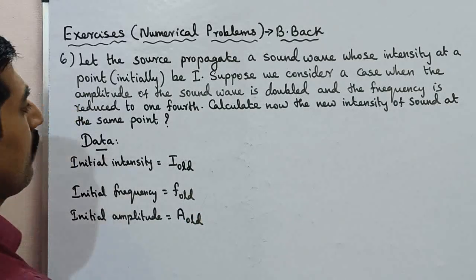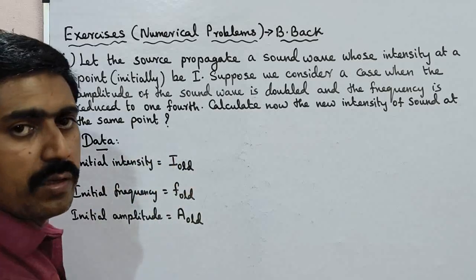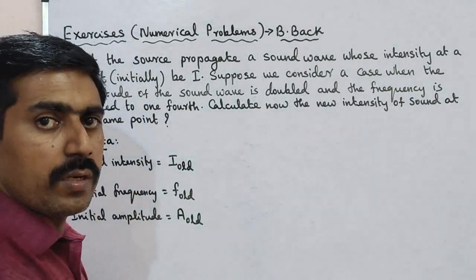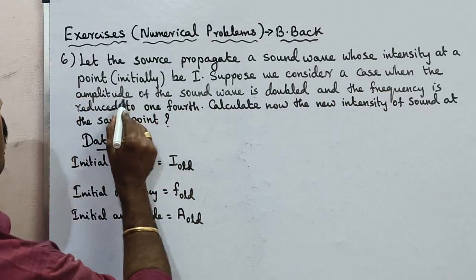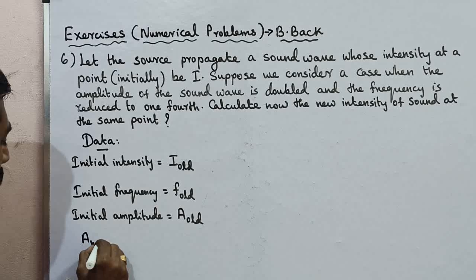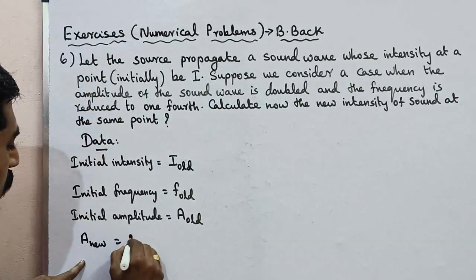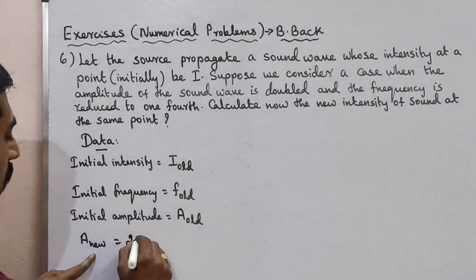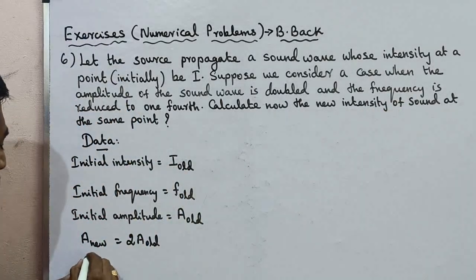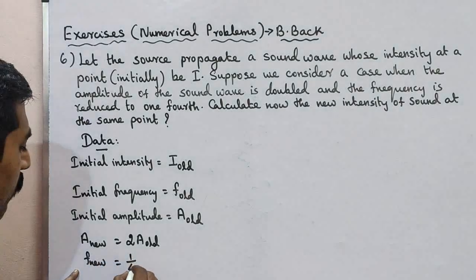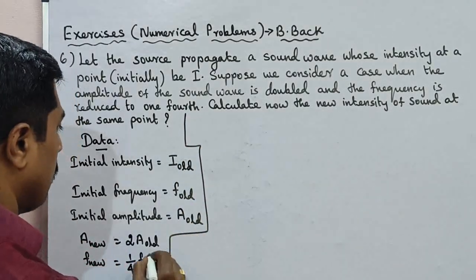The new amplitude is doubled: A new equals 2A old. The frequency is reduced to one-fourth: the new frequency equals one-fourth of the old frequency. We need to find the new intensity, I new.